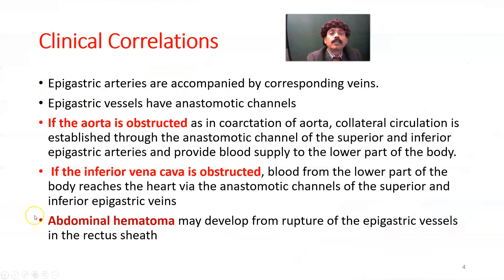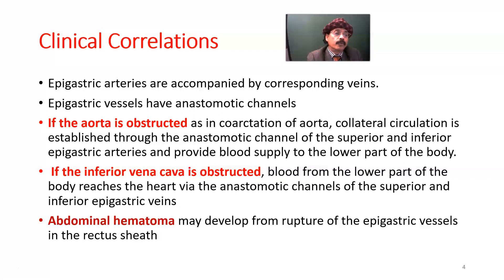For clinical correlation: the epigastric arteries are accompanied by corresponding veins. The superior epigastric artery passes along with the superior epigastric vein, and the inferior epigastric artery is accompanied by the inferior epigastric vein. The epigastric vessels have anastomotic channels, which is very important.